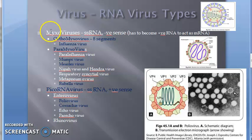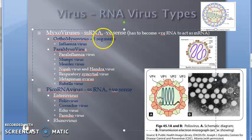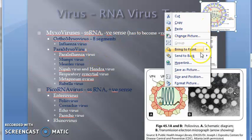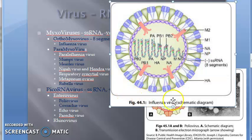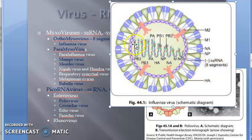Everything in mixovirus is single-stranded RNA. Under mixovirus, you have orthomyxovirus, and under orthomyxovirus, you have influenza virus. Influenza virus has eight segments of single-stranded RNA.